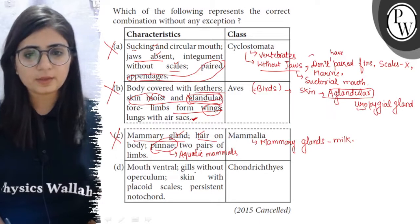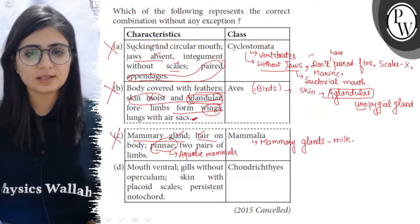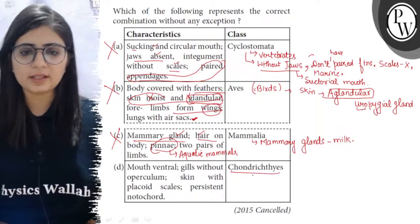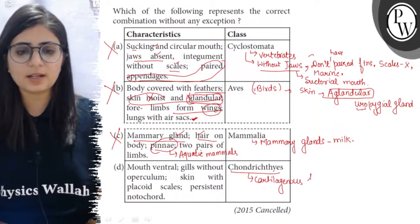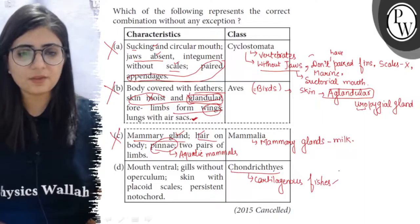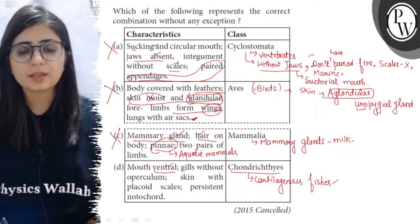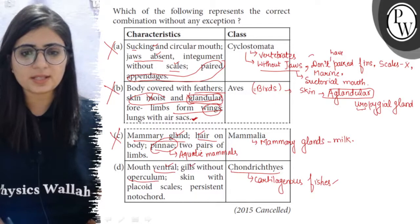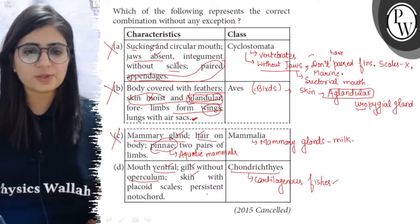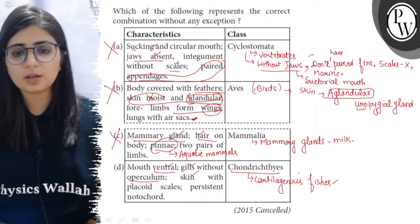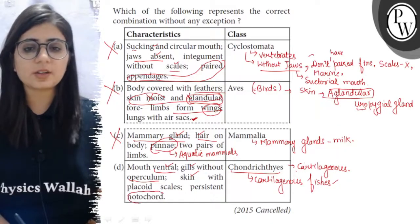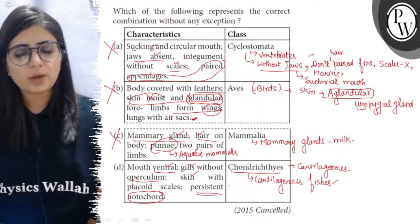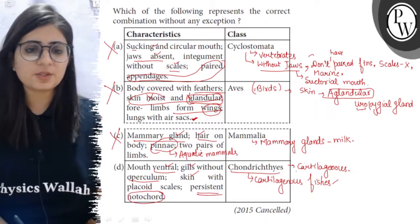The next statement is: mouth ventral, gills without operculum, skin with placoid scales, and persistent notochord — and these are the features of Chondrichthyes. Chondrichthyes is a class of cartilaginous fishes. These are marine fishes where the mouth is present on the ventral side. Gills are without gill cover, and the gill cover is known as the operculum, so it is absent. Skin is covered with placoid scales, which is also correct. They do not have a bony skeleton; their skeleton is composed of cartilages, which is why they are placed in Chondrichthyes. The notochord, a rod-like structure derived from mesoderm, is present throughout life. So all these features are correct with respect to this class.